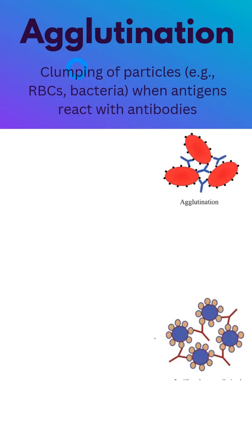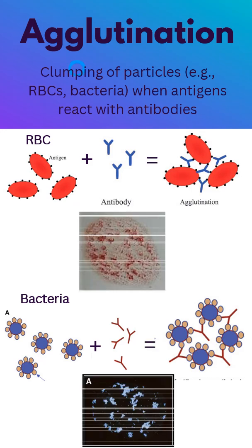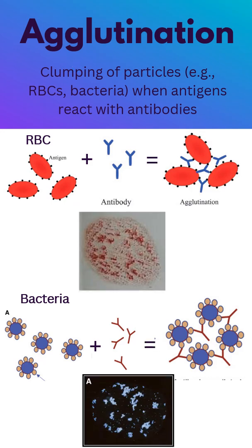Agglutination is the clumping of particles like red blood cells or bacteria when their surface antigens bind to specific antibodies. This visible clumping confirms the presence of antigen-antibody interaction.